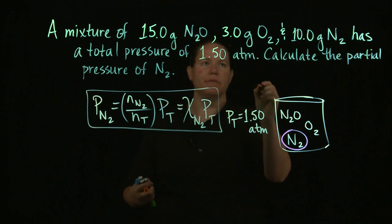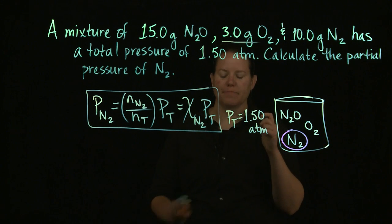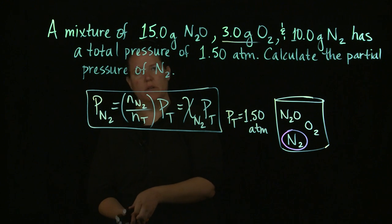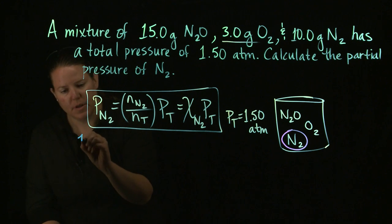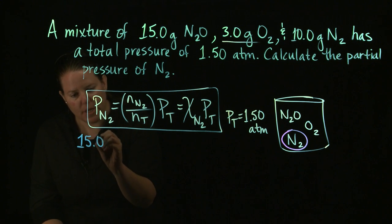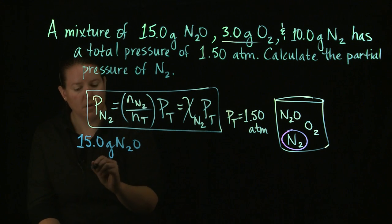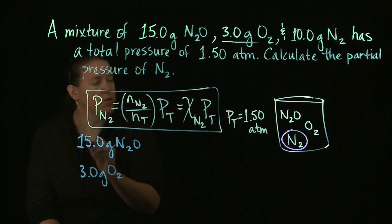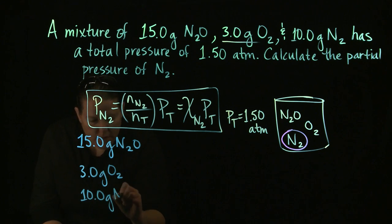Notice that it's in moles. What was I given? Grams. Bummer. You're going to have to go from grams to moles, guys. Grams to moles. Moles to grams. We tend to know how to do that because we know about molar masses, right? So in terms of this, 15 grams of N2O, 3 grams of O2, and 10 grams of N2.